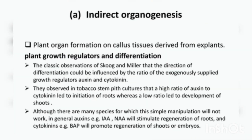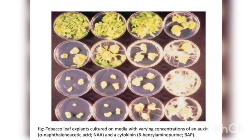In organogenesis, if the callus has a unipolar structure it can develop into a shoot or root, and if it is bipolar it can develop into a whole organ. Indirect organogenesis means plant organ formation on callus tissue derived from an explant, and for this we use plant growth regulators. The Skoog and Miller medium is used, and the ratio of auxin and cytokinin influences the differentiation of the callus tissue.